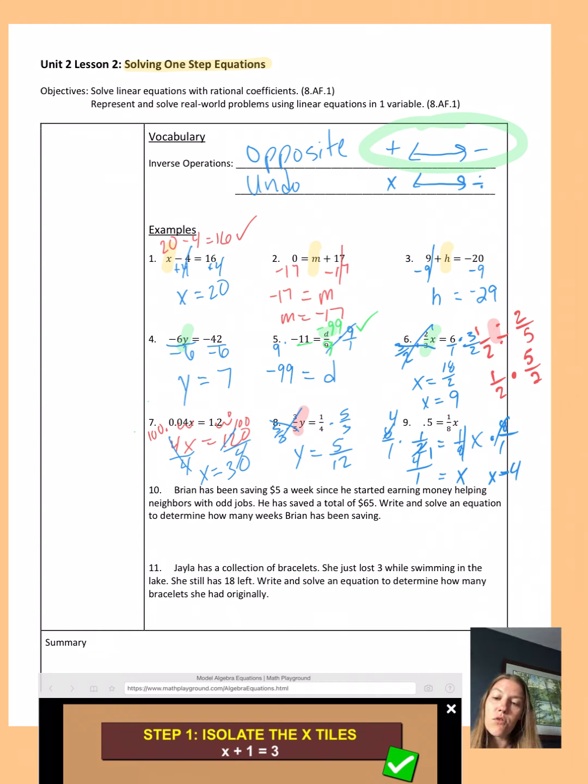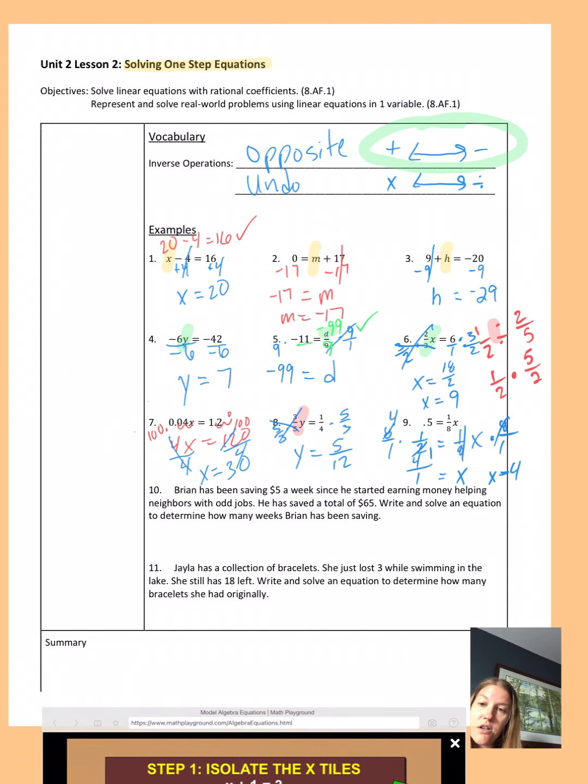And then before we are done with this here, for our summary at the bottom, we are just going to write ourselves some notes. We're going to start with our variable. So sometimes we're going to start on the right side. Sometimes we're going to start on the left side. Depends on where our variable is at. And we're going to use inverse or opposite operations. Use the wording that makes the most sense to you.